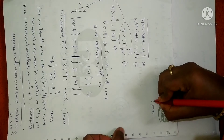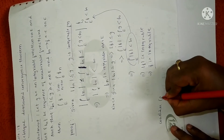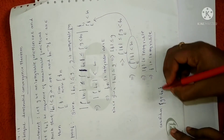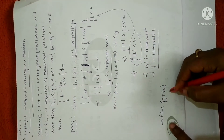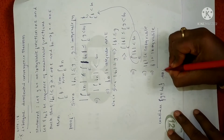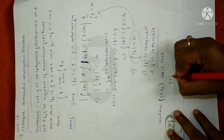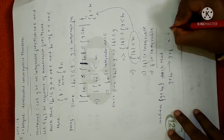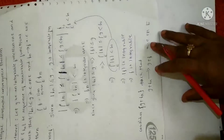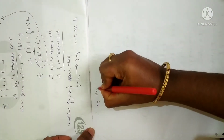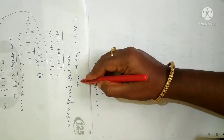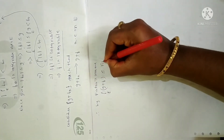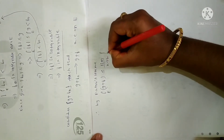Now let us consider the function {g + fn}, which is a sequence of non-negative measurable functions. We consider it in such a way that g + fn converges to g + f almost everywhere on the domain E. Since it is a non-negative measurable function, we can apply Fatou's lemma. Therefore by Fatou's lemma, the integral over E of g + f is less than or equal to the limit supremum as n tends to infinity of the integral over E of g + fn.